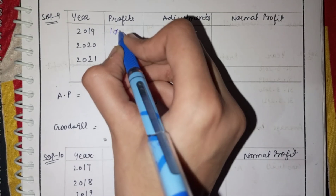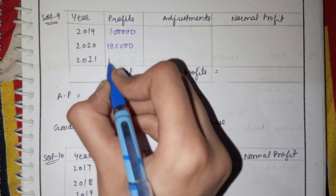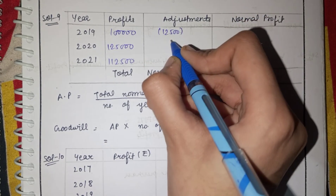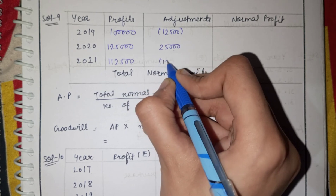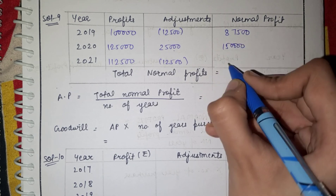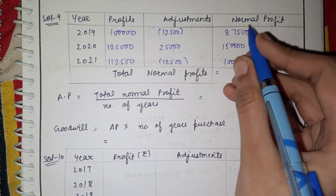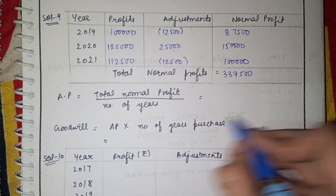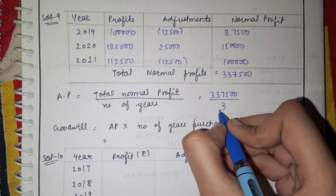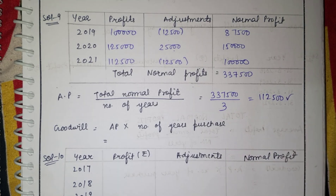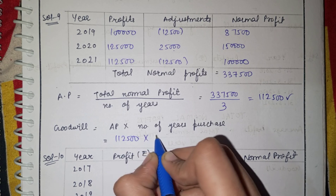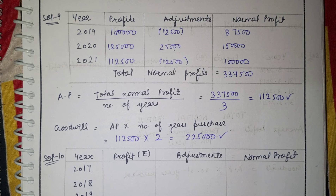In 2019, profit was 1,00,000 with abnormal gain of 1,25,000 minus. In 2020, profit was 1,25,000 with abnormal loss of 25,000 plus. In 2021, profit was given with 1,25,000 insurance premium added. After adjustments, the total normal profit is 3,37,500. Dividing by 3 years gives average profit of 1,12,500. Multiplying by 2-year purchase gives goodwill of 2,25,000.